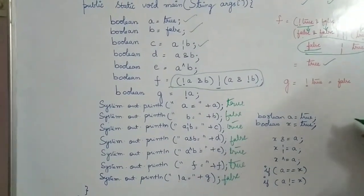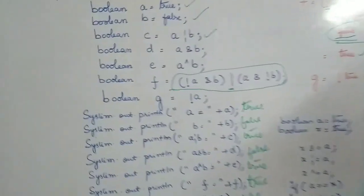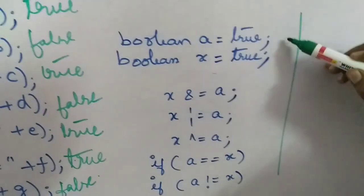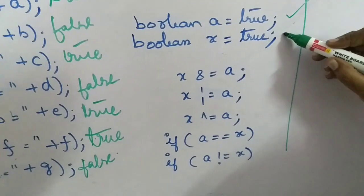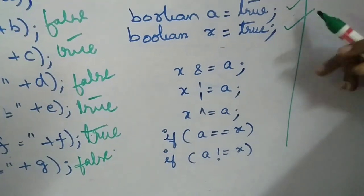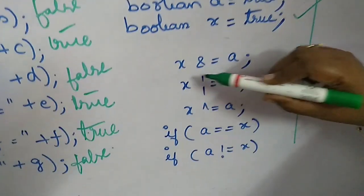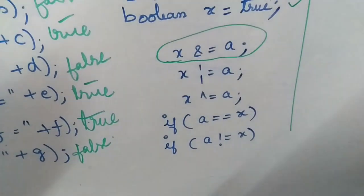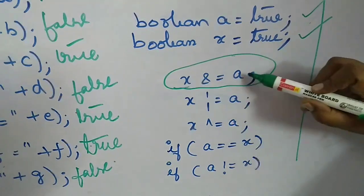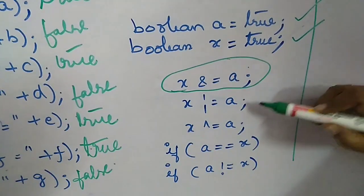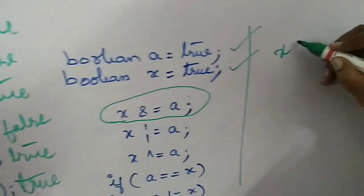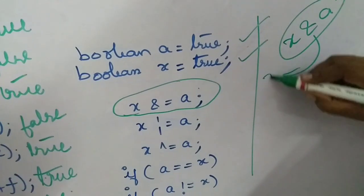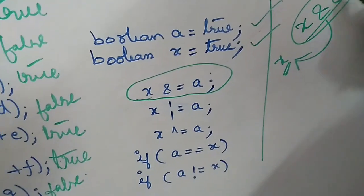Now let us look at compound assignment operators. I am declaring boolean A equal to true and X equal to true. We are applying compound assignment: X &= A means the AND operation is performed on X and A, and the result is stored back in X.